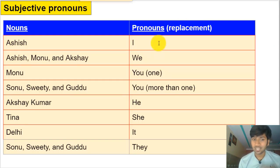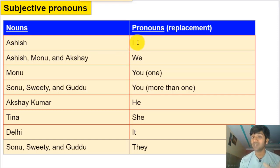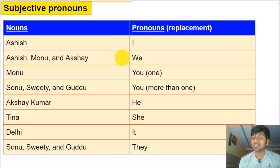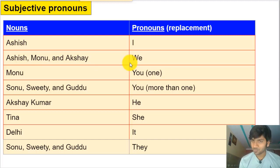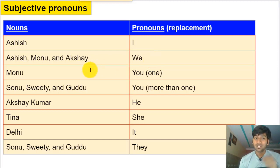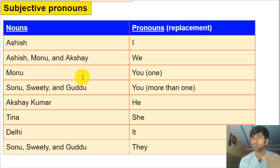If I want to refer to myself, instead of taking my own name I'll say 'I.' Instead of 'Ashish is an amazing fighter' — 'I am an amazing fighter.' For 'we': Ashish, Monu and Akshay are amazing friends — 'We are amazing friends. We went to Goa last night.' For second person, instead of saying 'I love Monu, Monu come here,' I say 'I love you, you come here.' Even for more than one person I still use 'you.'